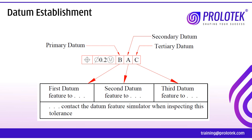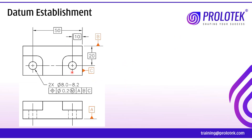We will take one example to understand what A, B, C really mean. Here we have a drawing with three datum feature symbols A, B, C. The bottom surface is taken as A, the backside surface is taken as B, and the side surface is taken as C. All three datums are taken as reference to make two holes, and in the feature control frame we have A, B, C. So A becomes the primary datum with top priority, B becomes the secondary datum with second priority, and C becomes the tertiary datum with third priority.